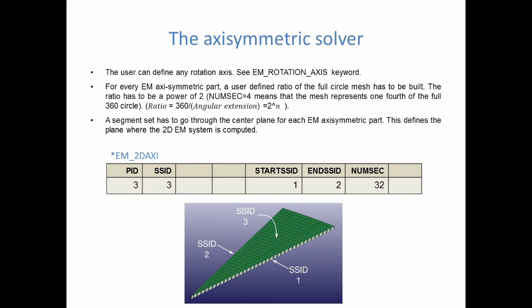Then, for each axisymmetric part, a user defined ratio of the full circle mesh has to be built, basically a slice of a cake. But the angle of that slice needs to be a power of 2. For example, the user can define a fourth circle, or an eighth, or a sixteenth, or such as, in this case, what you see there below, a 32nd of the full 360-degree circle. This is the point of the numsec flag, which you see below.